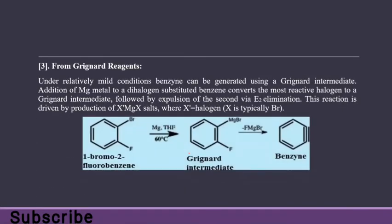The third method is from a Grignard reagent. We need a dihalogen substituent on the benzene ring — for example, 1-bromo-2-fluorobenzene. When treated with magnesium metal, a Grignard intermediate forms — R-MgX — where MgX is MgBr. Then by removal of fluorine and MgBr via E2 elimination, we obtain our benzyne molecule.